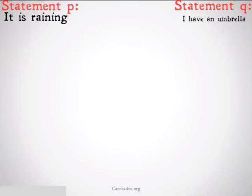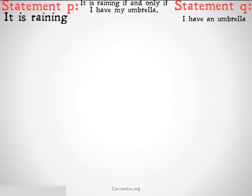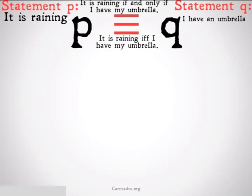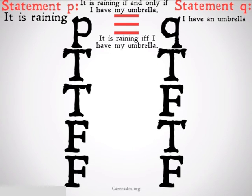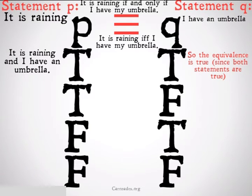Let's take a look at the truth table. If my statements are 'it is raining' and 'I have an umbrella,' this is going to be combined into 'it is raining if and only if I have my umbrella,' written as P triple bar Q. We fill in our truth table as normal under P and under Q. In the first row, it is raining and I have my umbrella — the truth values are the same, so the whole thing is true.